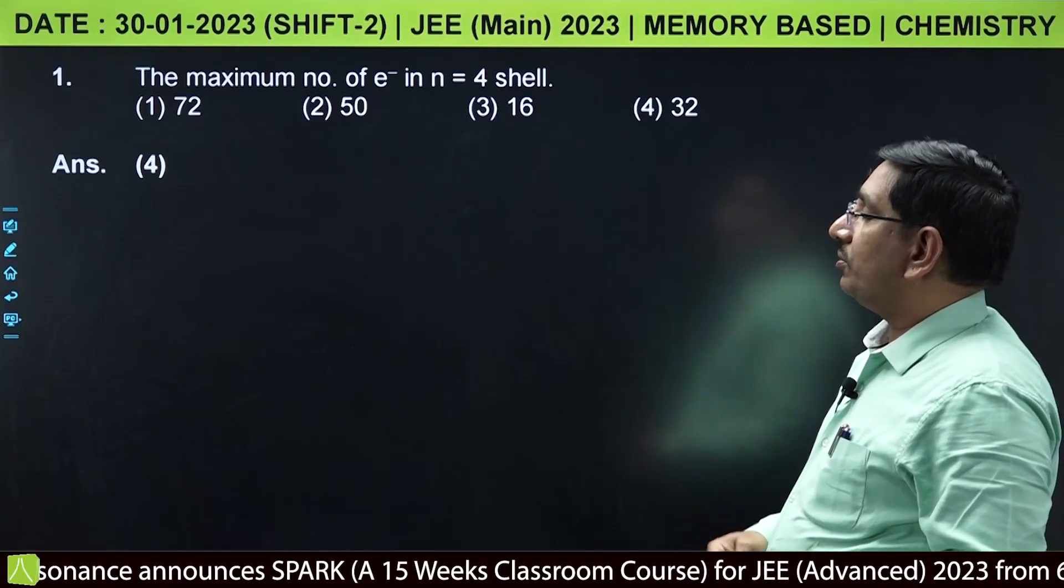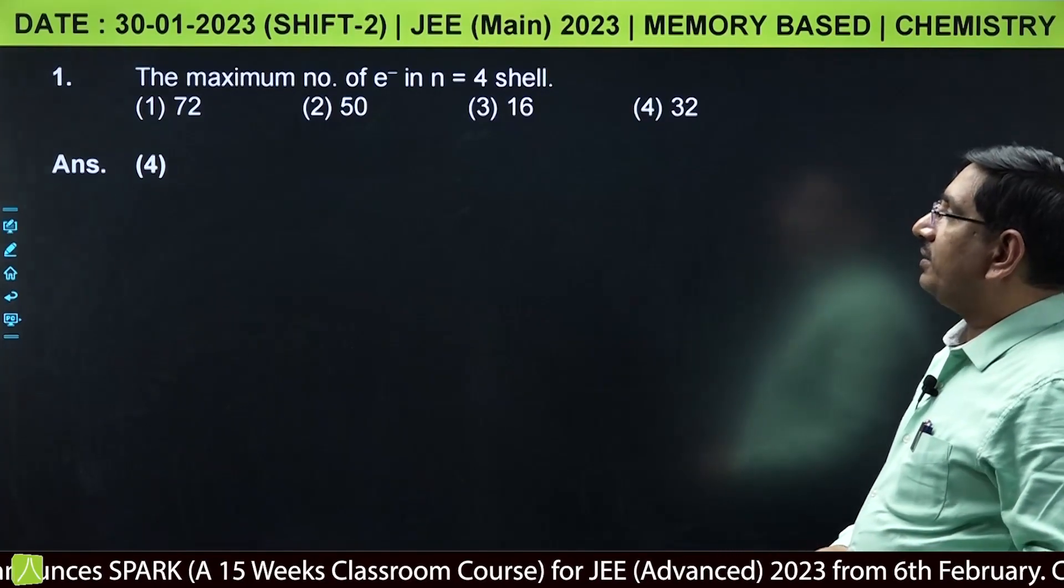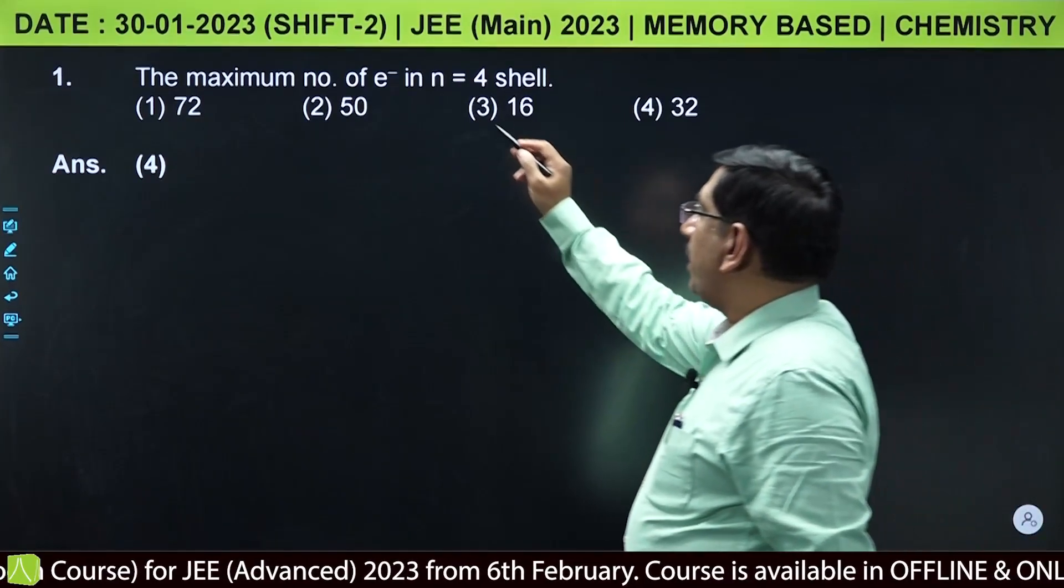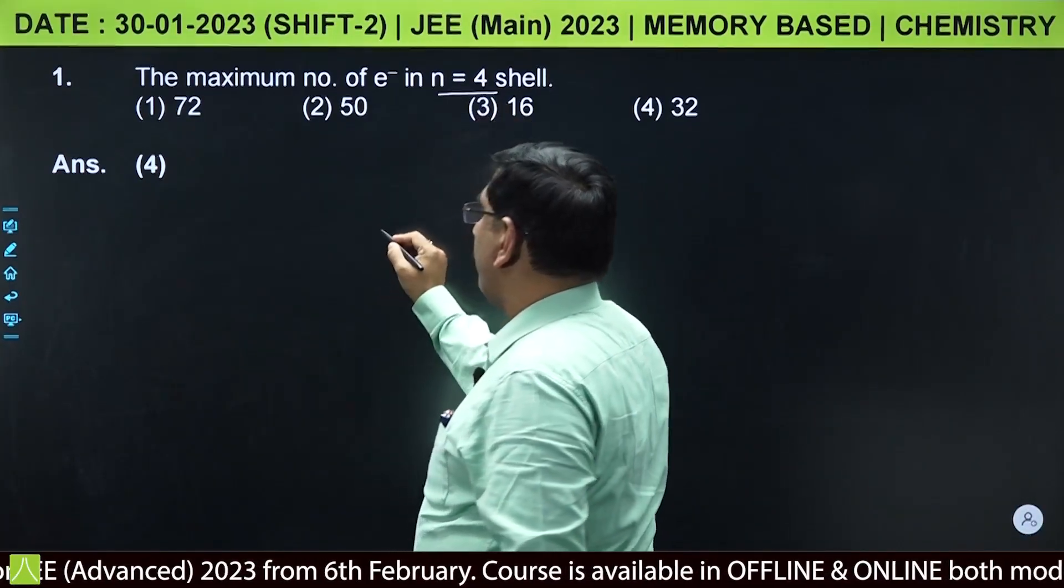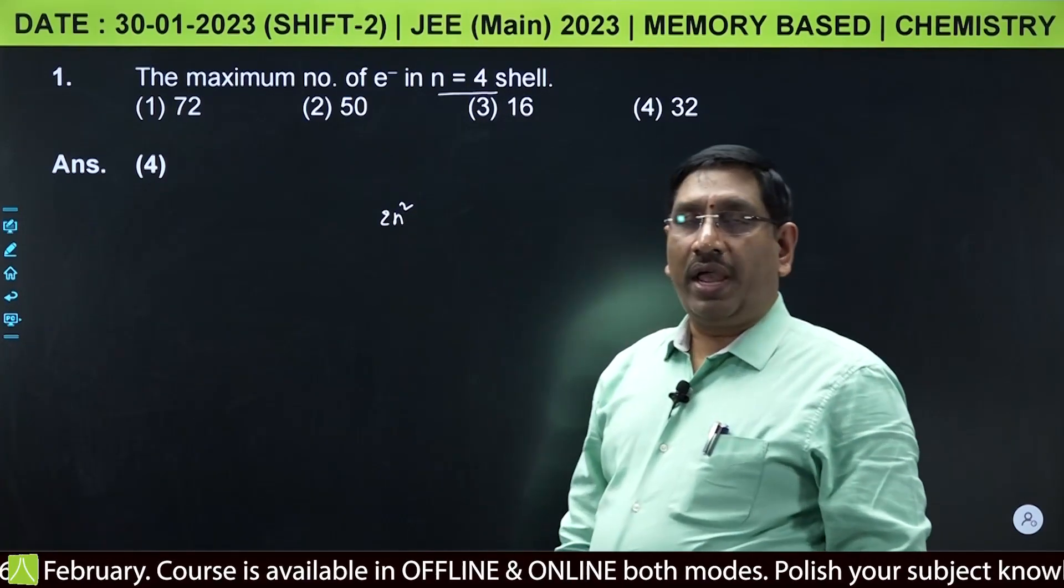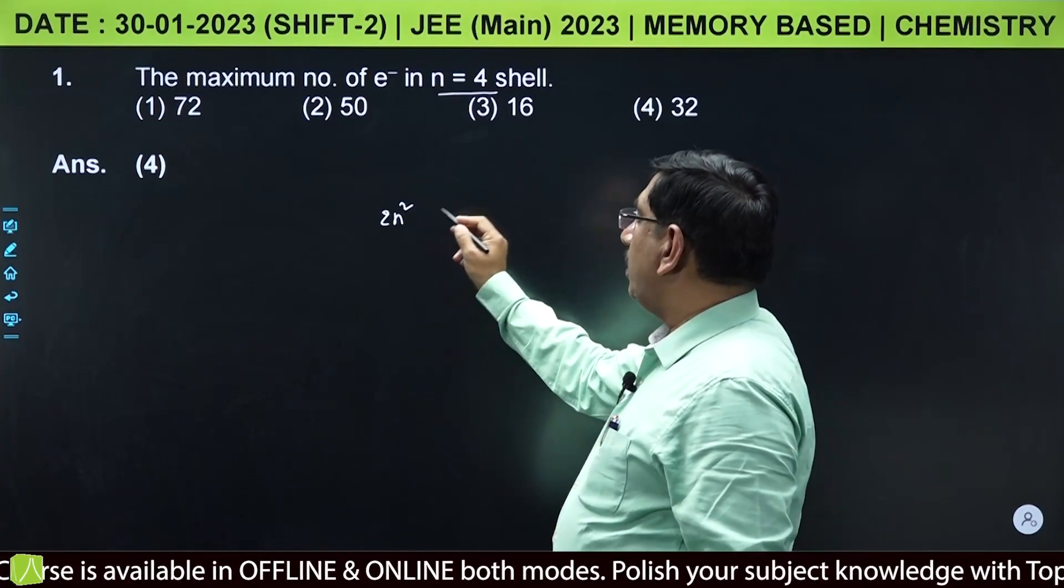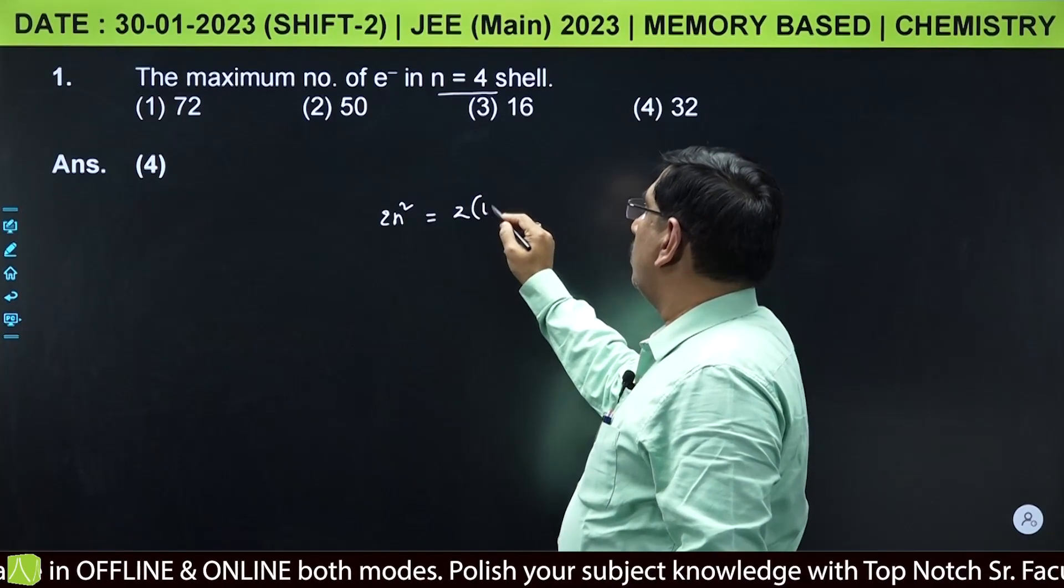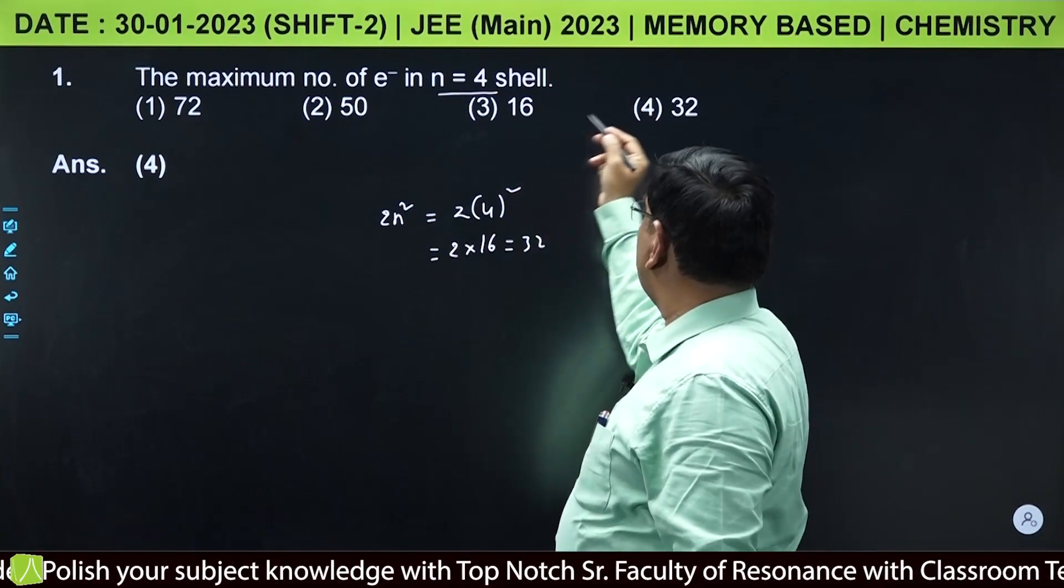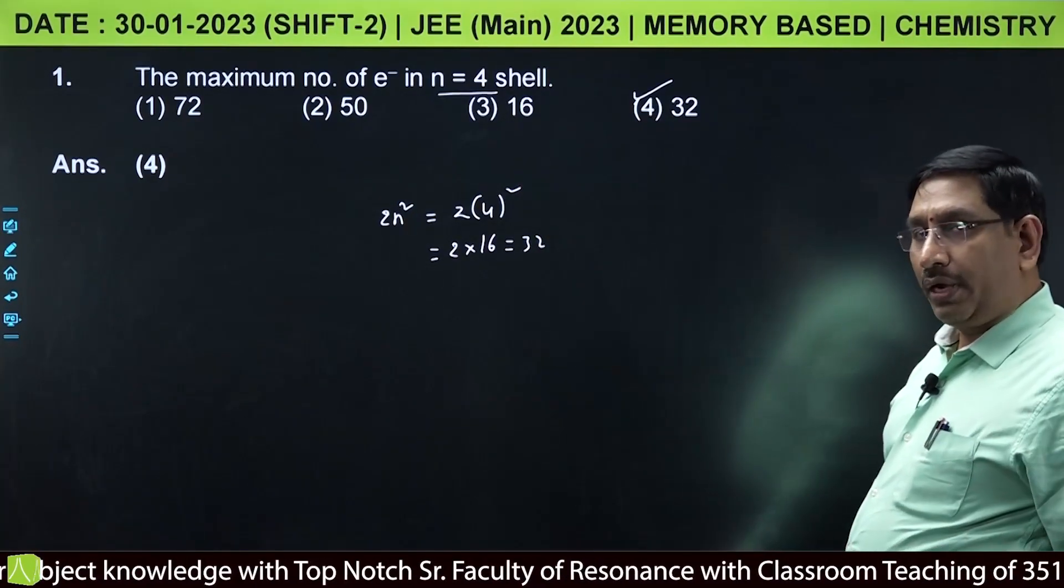Let us see the first question. The maximum number of electrons in n equal to 4 shell is calculated using the 2n square formula. n value is 4, so it is 2 into 16 equals 32. The answer is 32 electrons.